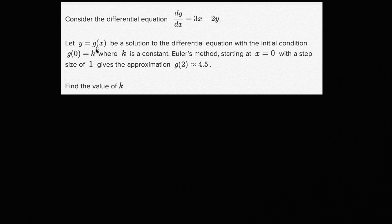Let y = g(x) be a solution to the differential equation with the initial condition g(0) = k, where k is a constant. Euler's method, starting at x = 0, with a step size of 1, gives the approximation that g(2) ≈ 4.5. Find the value of k.